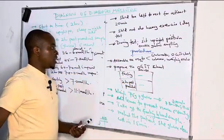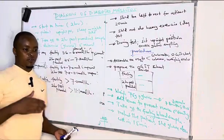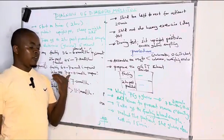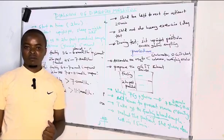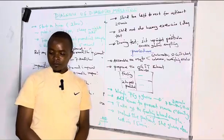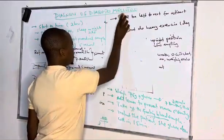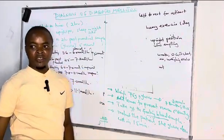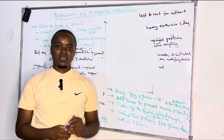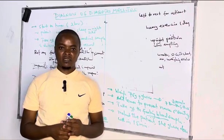After finishing OGTT, we have seen it is a test whereby a patient is given a standard glucose dose — 75 grams for adults and 1.75 grams per kg for children — to see if they can cope with it. We have seen how to prepare the patient and how the test is done. In the next video, we are going to look at the hexokinase method and glucose oxidase method. Thank you so much for listening until the end. Be blessed.